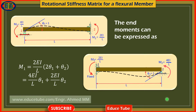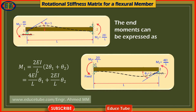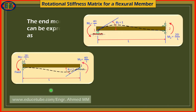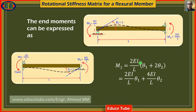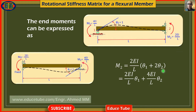With simplification, we can write M1 equal to 4EI over L times theta1 plus 2EI over L times theta2. And for M2, similarly, M2 equal to 2EI over L times theta1 plus 4EI over L times theta2. So we now have two equations for the moments M1 and M2.